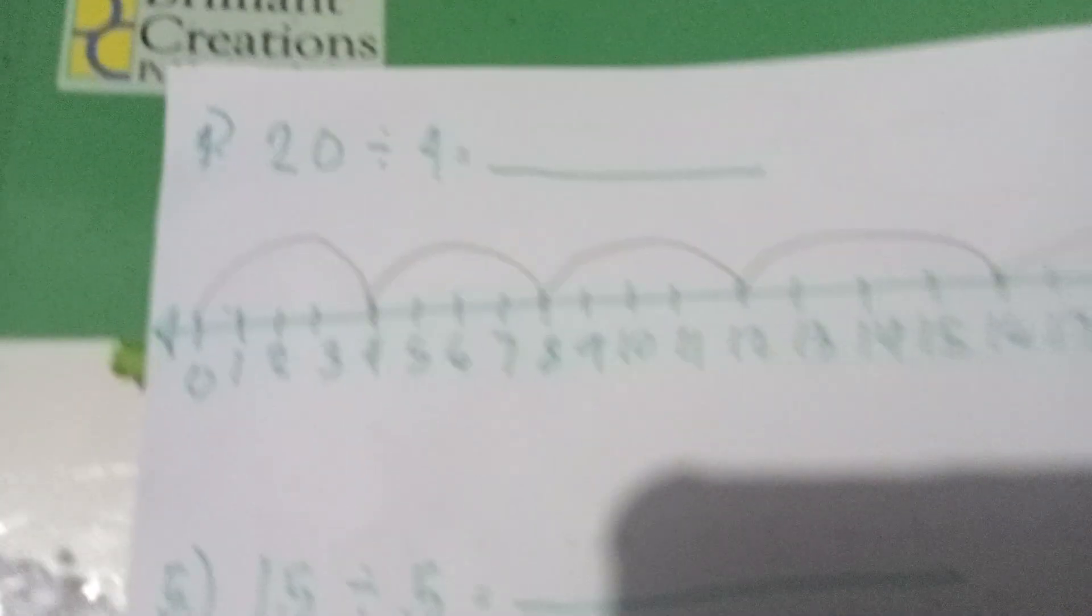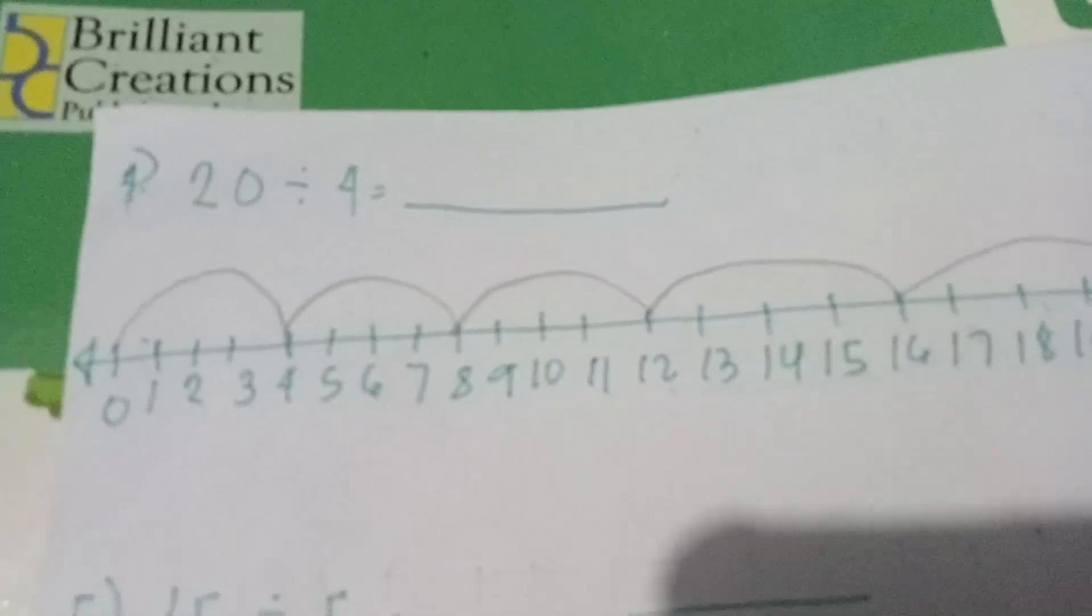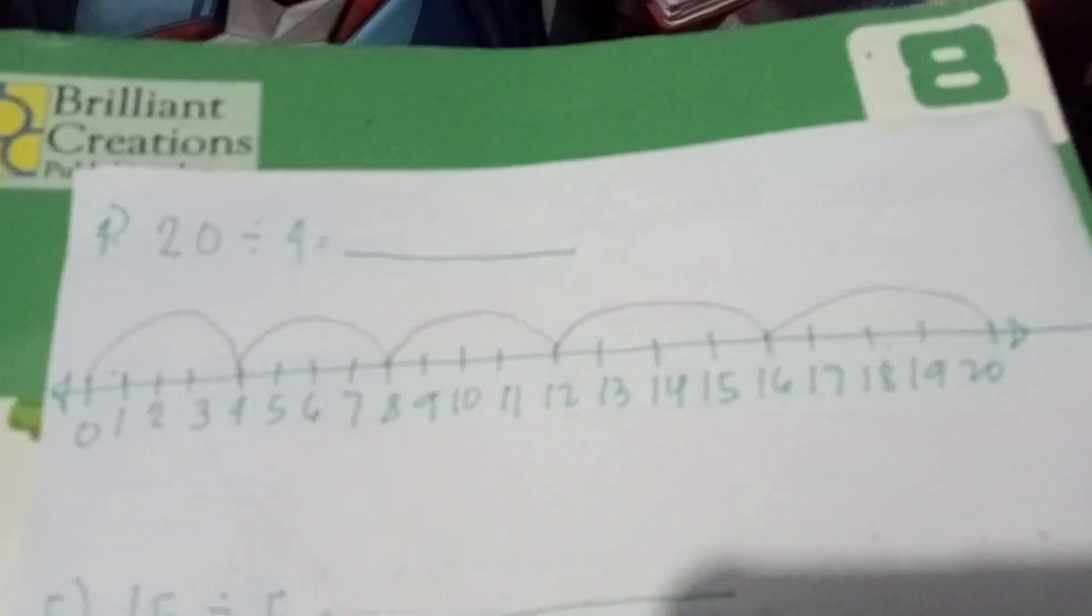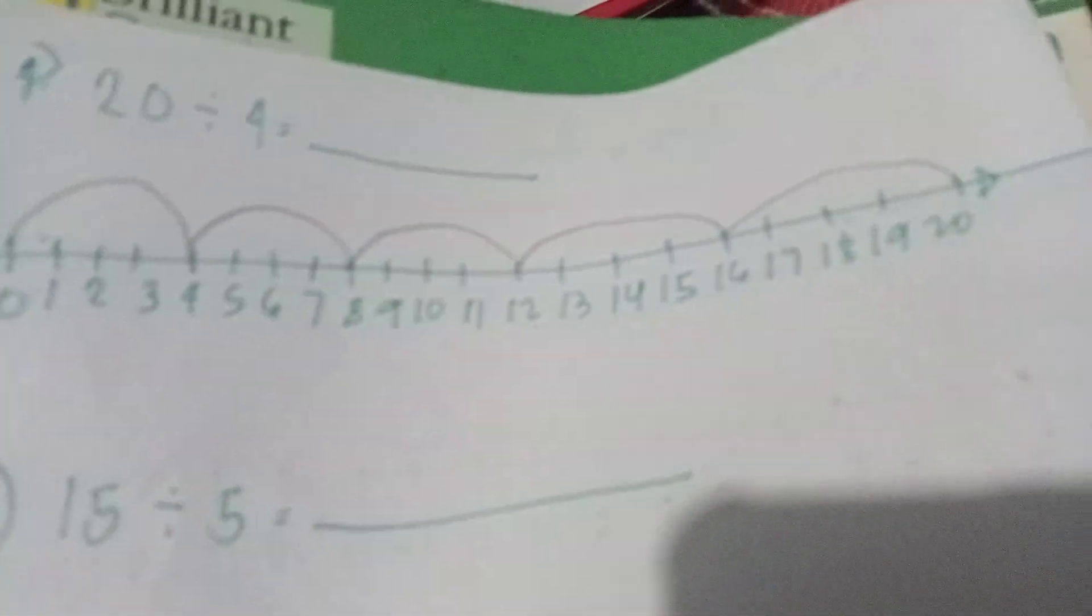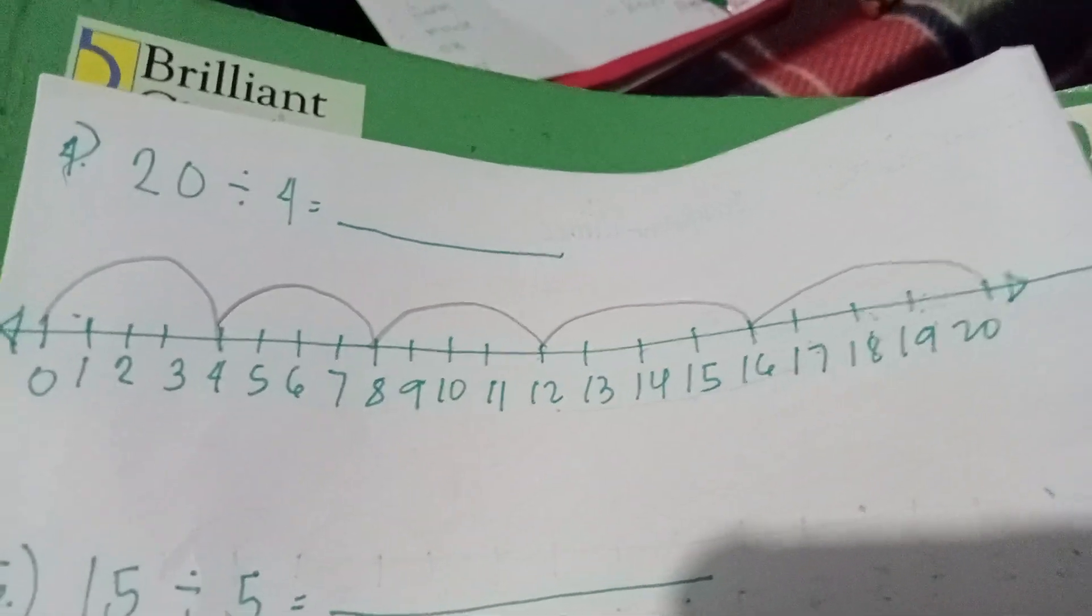So 20 divided by 4, what is your answer now? You are going to count 1, 2, 3, 4, 5. Wow, your answer is correct! 1, 2, 3, 4, 5 chords.